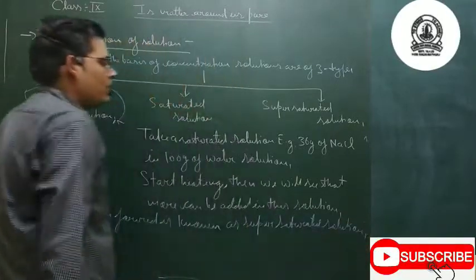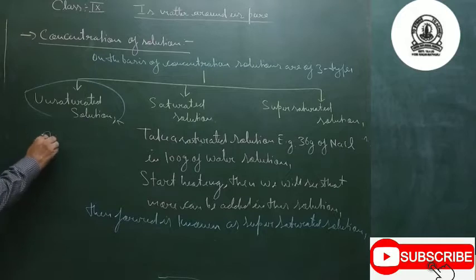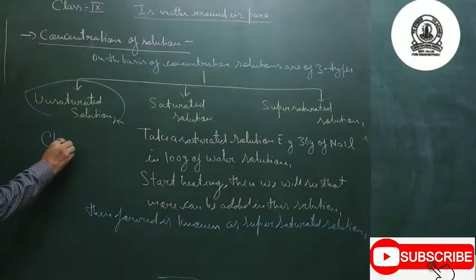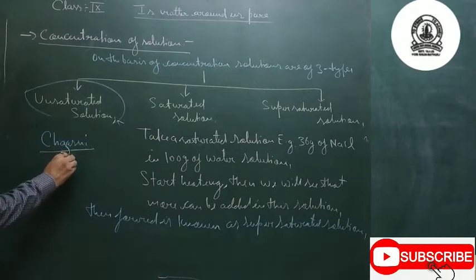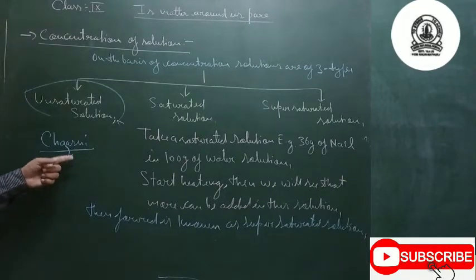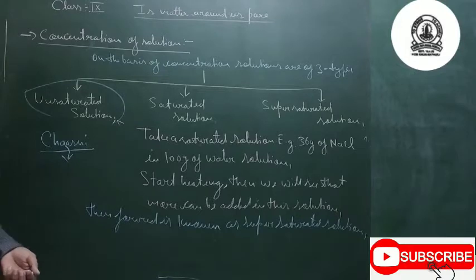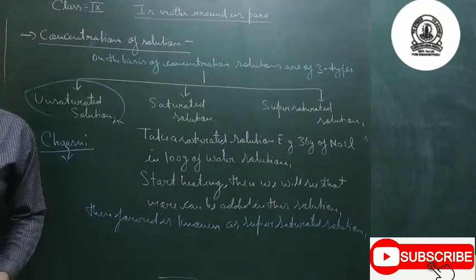For example, you have seen Chashni used in Jalebi — it is a supersaturated solution of sugar and water. So these are the three types of solutions on the basis of concentration: unsaturated solution, saturated solution, and supersaturated solution.